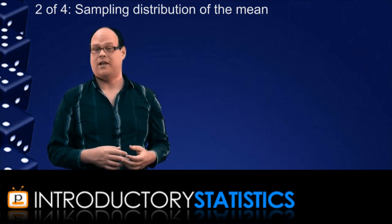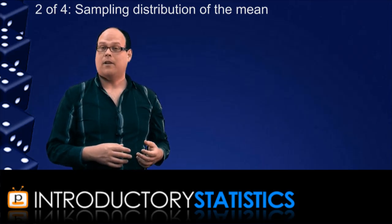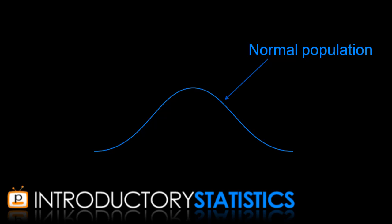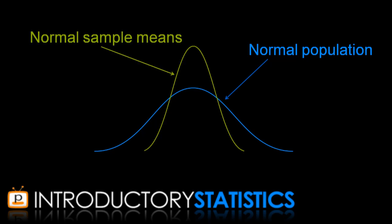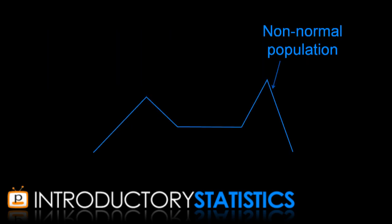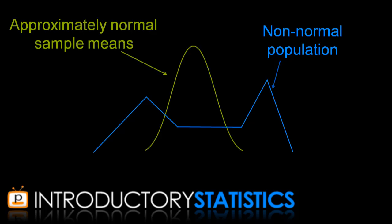In terms of the actual shape of the sampling distribution, if your population X is normal, then so is the set of sample means. But even if X isn't normal, X bar will still be approximately normal, provided your sample size is big enough.